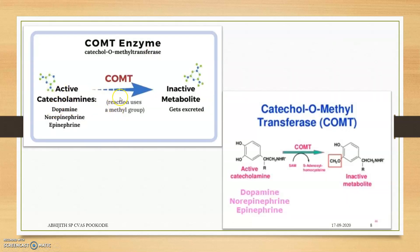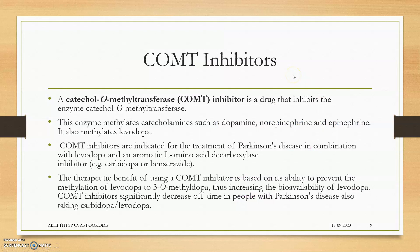Active catecholamines have a methyl group added by SAM and COMT and are converted to inactive metabolites. COMT inhibitors are drugs which inhibit the action of COMT. This enzyme methylates catecholamines such as dopamine, norepinephrine, and epinephrine. COMT inhibitors decrease the action of COMT so that it cannot act upon dopamine, norepinephrine, and epinephrine. They are actually a counterpart of MAO inhibitors, having the same type of action — degradation of amines, that is catecholamines or monoamines.